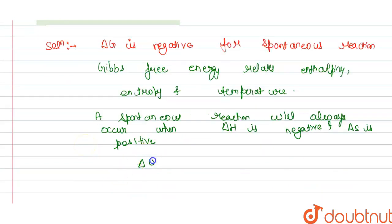We know that Gibbs free energy is equals to delta H minus T delta S. So this is the answer.